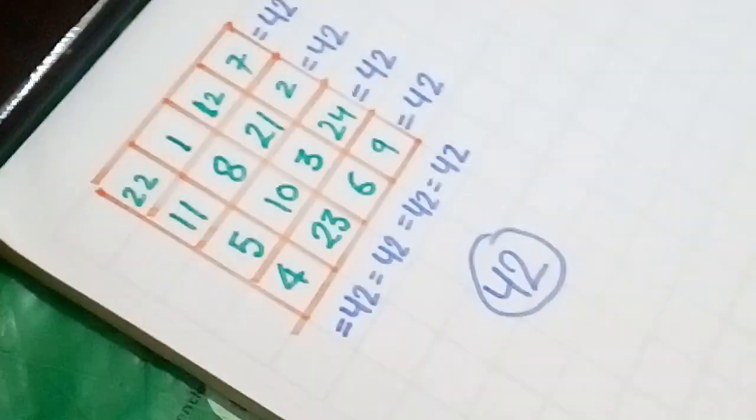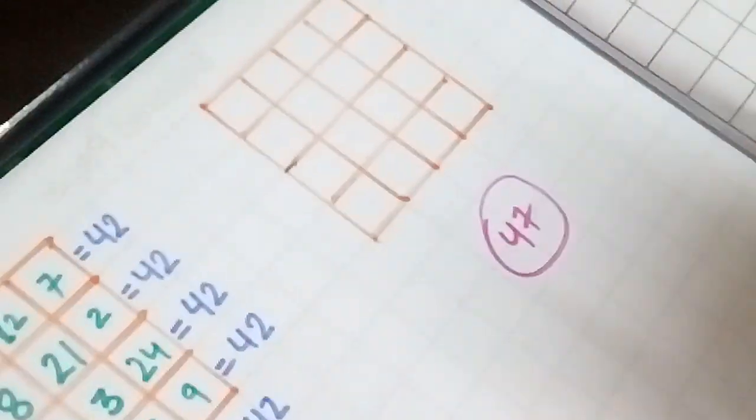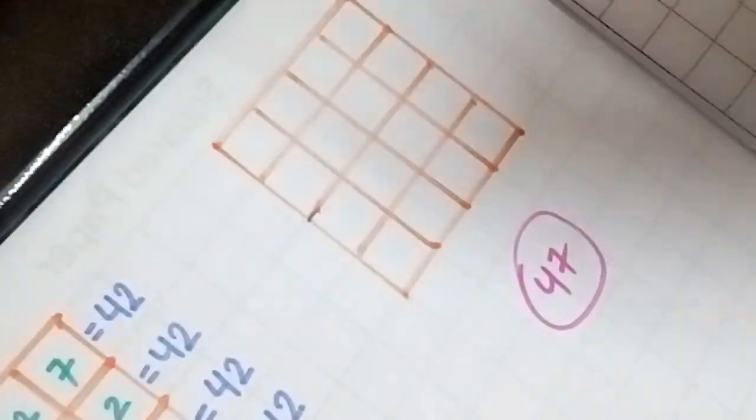Suppose we have given the number 47 and we have to design a 4 into 4 magic square for 47 in a way that the numbers sum would be 47 in every way.